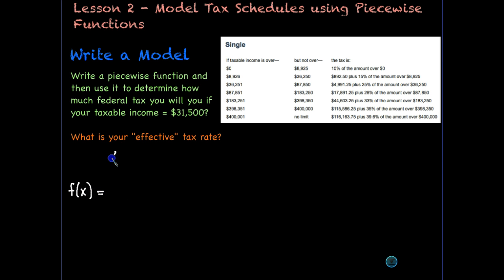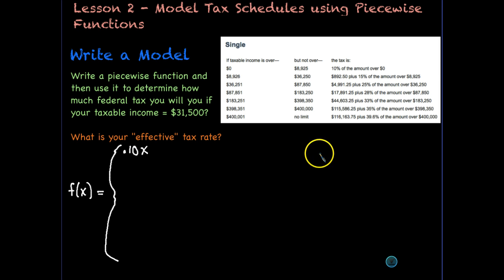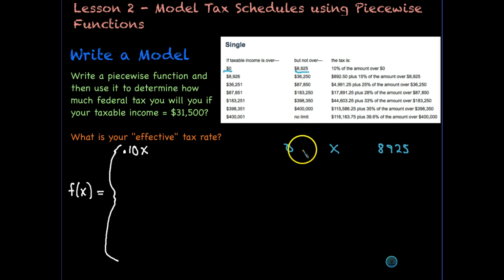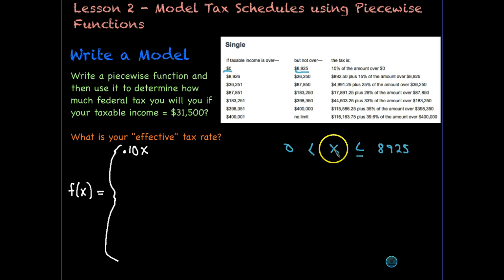In a piecewise function, we start with the first scenario. The equation is 10% of the amount over zero, meaning we pay 10% of our income. The domain for this piece is 0 < x ≤ 8,925. The key is the wording: 'over' means greater than (not equal to), and 'but not over' means less than or equal to. This sign convention stays the same throughout.